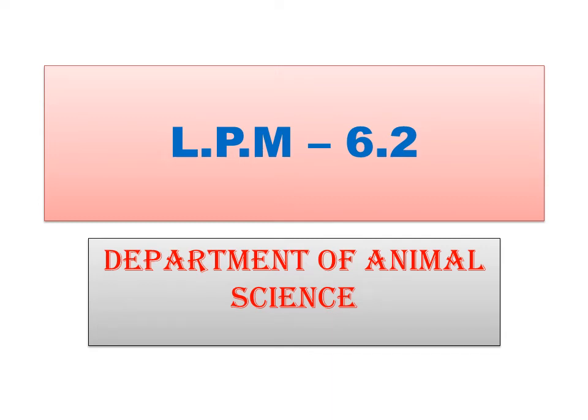Hello dear students. Today we will learn about the improvement of poultry. Improvement means to produce a generation with higher egg and meat production as compared to its previous generation — this is called improvement.